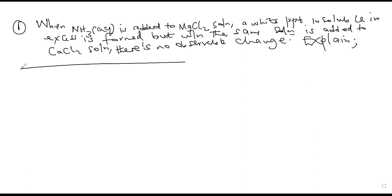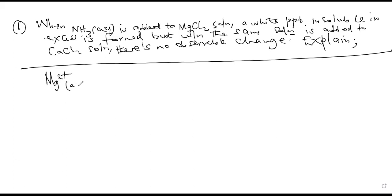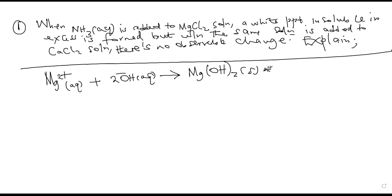Magnesium chloride produces magnesium ions in solution. The magnesium ions react with hydroxide ions from the aqueous ammonia, leading to formation of magnesium hydroxide as a precipitate. You should state that this magnesium hydroxide formed is basic and therefore cannot react with excess hydroxide ions or excess ammonia solution.